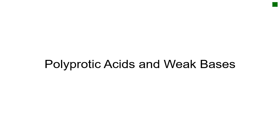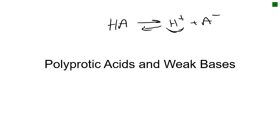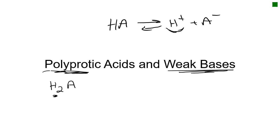Continuing in Chapter 4, we've done weak acids — specifically weak monoprotic acids, where we looked at HA dissociating into H⁺ and A⁻ and calculated the concentration of H⁺. What we need to look at now are polyprotic acids, which have more than one proton, and weak bases. For polyprotic acids, in most cases we can ignore the second proton, and for weak bases the process is very similar to weak acids.